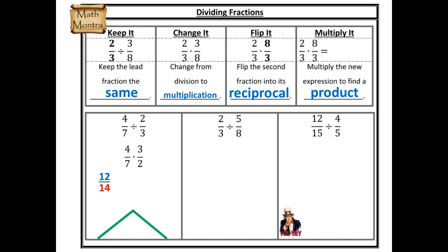Now I can just simplify. I'm going to find the factors of 12: one times 12, two times six, three times four. Starting with the largest factor, I divide them into 14 to see when I get a whole value. 14 divided by 12 doesn't work, divide by six — four — three doesn't work. The closest one is divide by two, so I'm going to divide both my numerator and denominator by two. My fraction is six sevenths — that's my final answer.